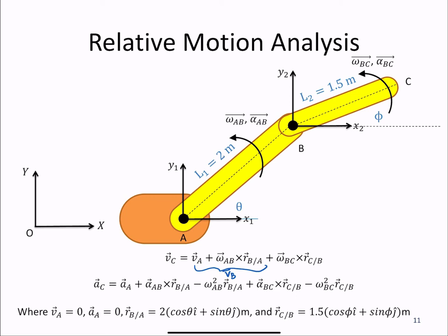And we have a chain of relative motions that take us from A to B to C. And the same thing is true for acceleration, where the first three terms of the equation here represent the acceleration AB.